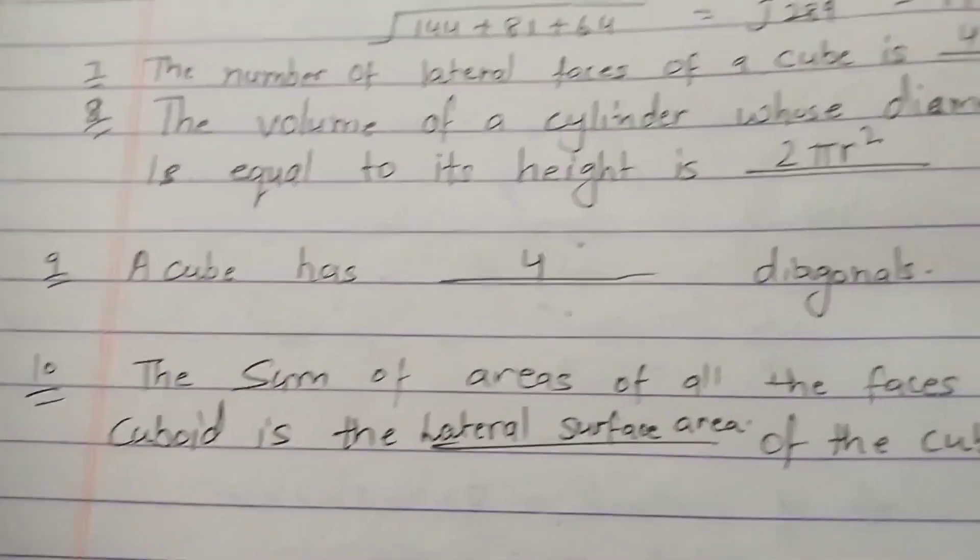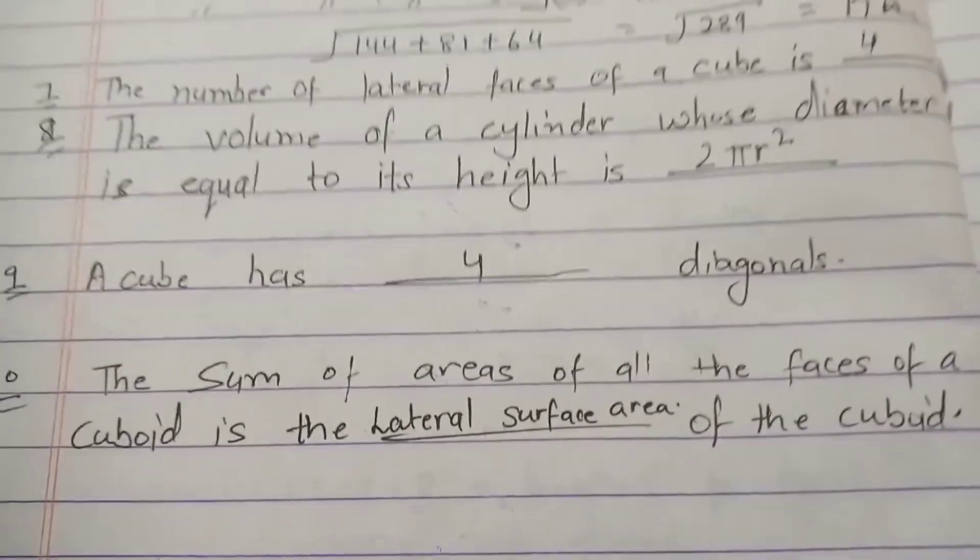Tenth question: the sum of areas of all the faces of cuboid is the what of the cuboid? The answer is total surface area.